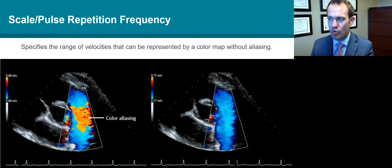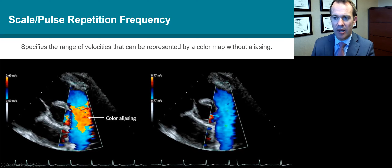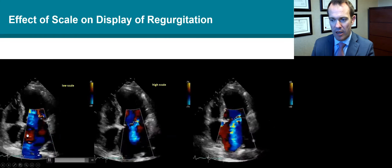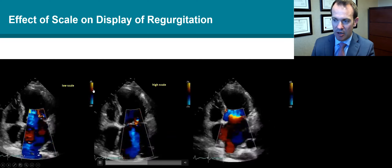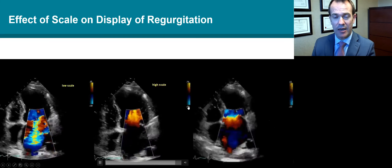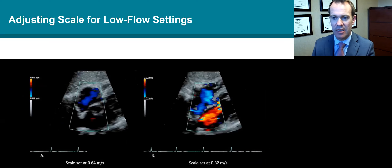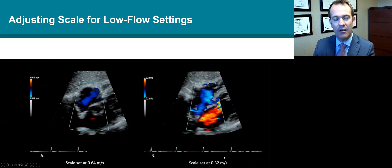The scale represents the range of velocities that can be displayed — we talk about the Nyquist limit here. With a Nyquist limit of 0.69 meters per second you can see aliasing, while increasing the velocity to 0.77 makes that aliasing go away. This is particularly important when displaying regurgitant volumes: if the scale is set too low, mitral regurgitation can look very severe, while if set too high, the MR looks very small. Ideally, set it between 50 and 70 centimeters per second. For low-flow situations such as atrial shunts, we might set the scale at about 0.3 meters per second.